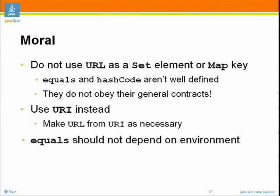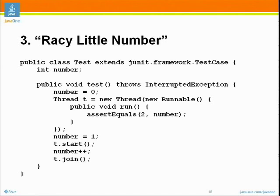And the general message for API designers is that your equals method should never depend on the environment. When checking if two objects are equal, it should involve quick tests of in-memory objects. Now I have one for you — a racy little number. We're introducing some new things here that I think have never been seen in a puzzler before: JUnit and concurrency.